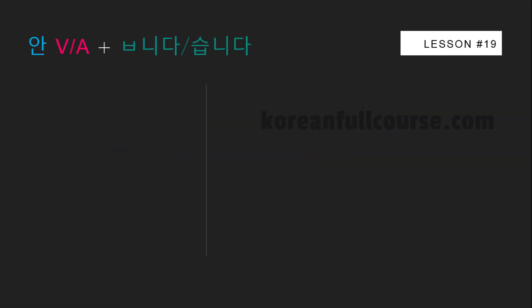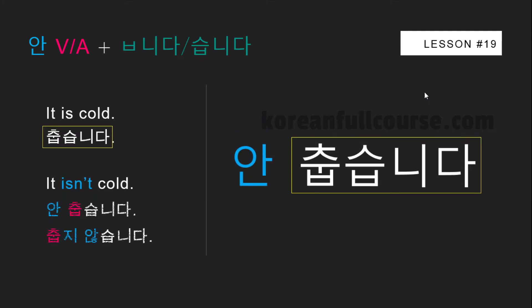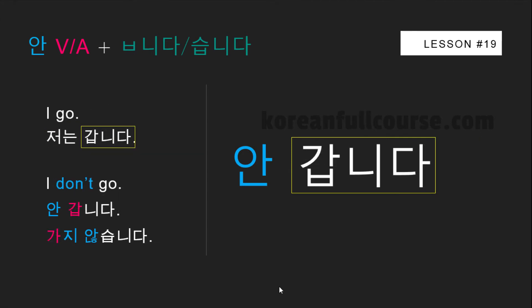There is another way to convert verbs and adjectives to a negative form: you can take a verb or adjective and just put 안 before it. For example, 안 춥습니다 and 춥지 않습니다 are both semantically equal and grammatically correct. Likewise for a verb: 안 갑니다 equals 가지 않습니다.